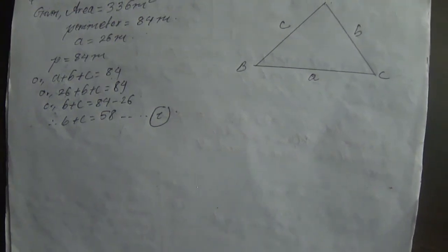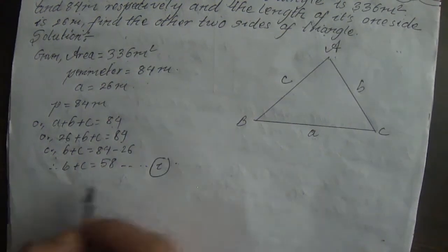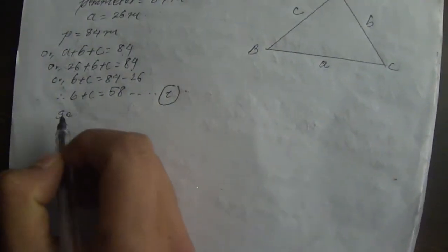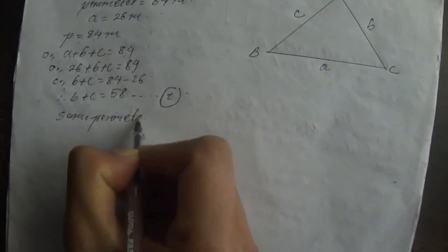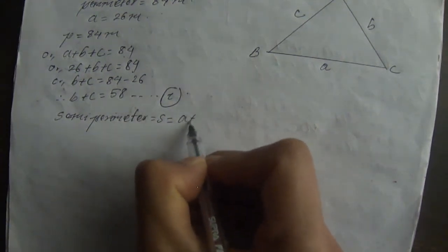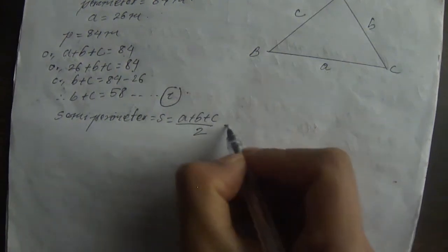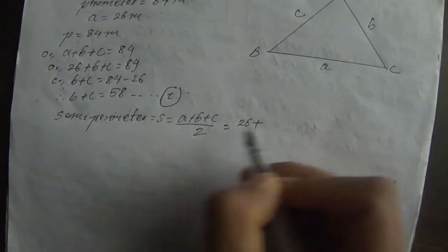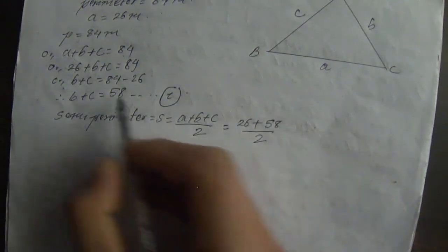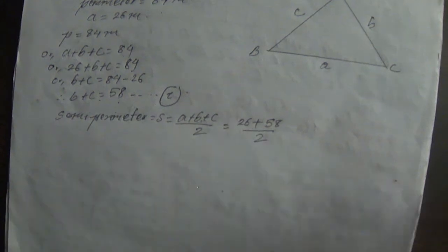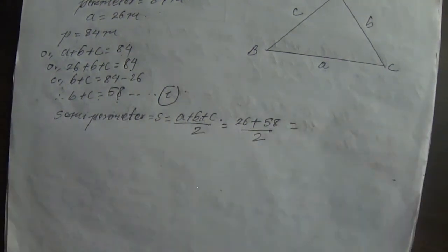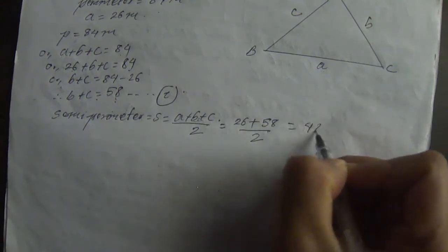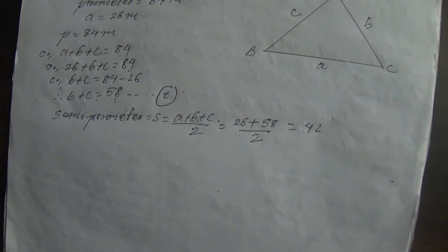Now we need the semi-perimeter. The semi-perimeter S is equal to (A plus B plus C) divided by 2. A is 26 and B plus C is 58, so S equals (26 plus 58) divided by 2, which gives us S equal to 42.